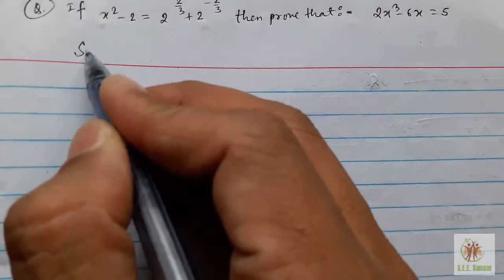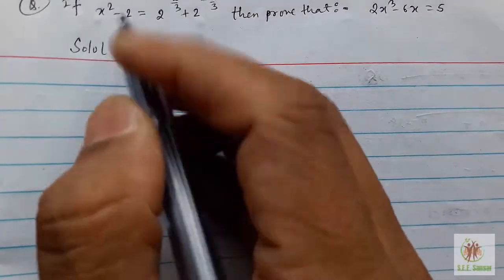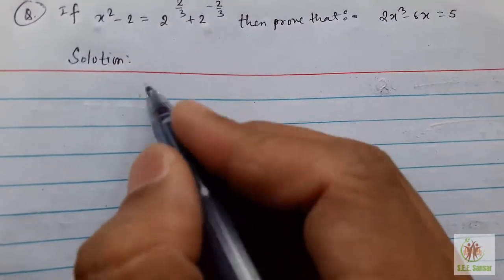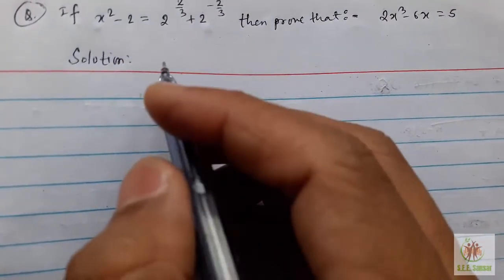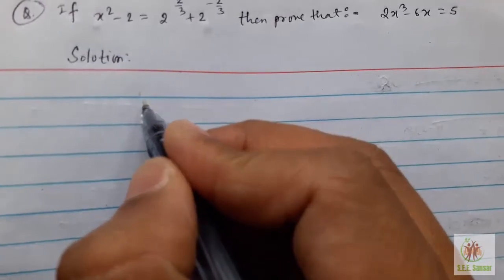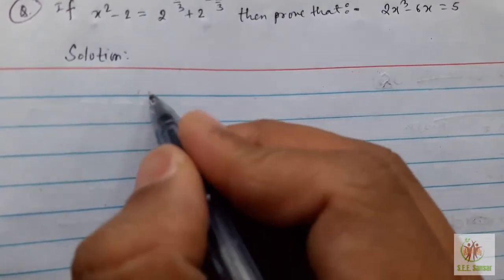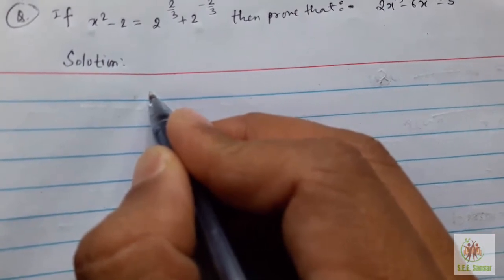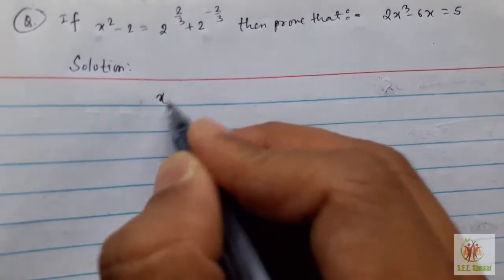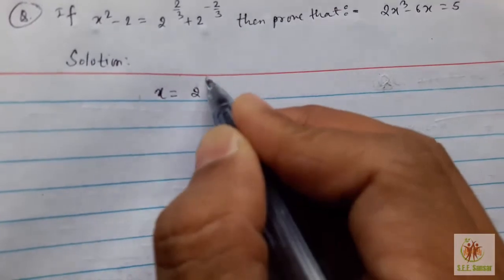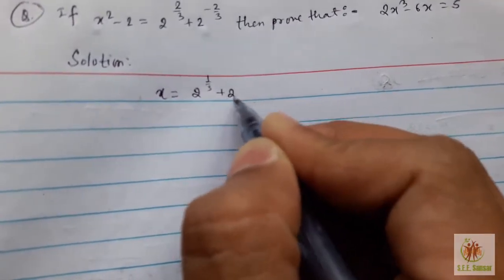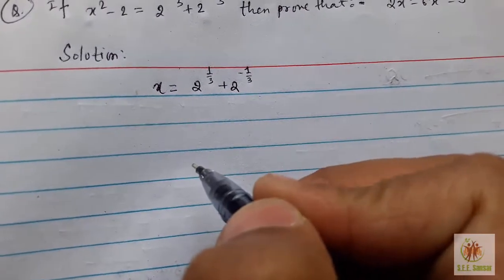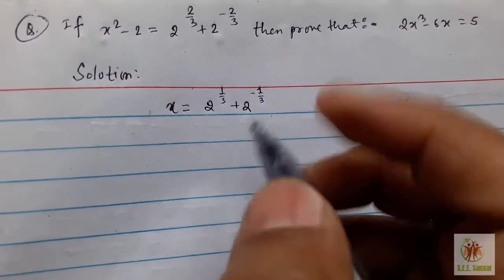Let's begin the solution. From the previous video clip, we established that x = 2^(1/3) + 2^(-1/3). We will use this result now.